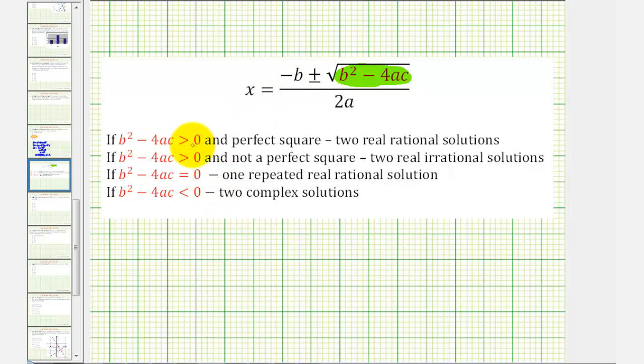If the discriminant is greater than zero and it's a perfect square, we have two real solutions or roots. If the discriminant is greater than zero and not a perfect square, we have two real irrational solutions or roots. And if the discriminant equals zero, which should be what we have, we have one real rational solution or root. And if the discriminant is negative, we have two complex solutions or roots.